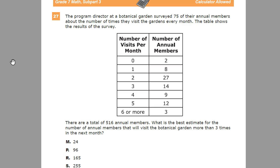The question says the program director at the botanical garden surveyed 75 of their annual members about the number of times they visited the gardens every month. This table shows the results of the survey. You have the number of times they come per month, including a couple of annual members that basically never show up but still pay — that does happen — and people who come six or more times.